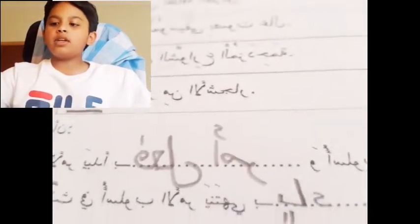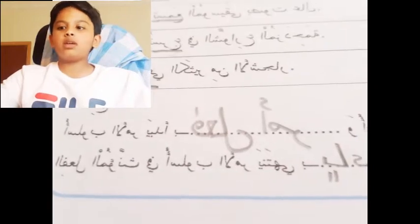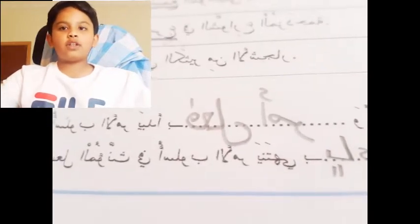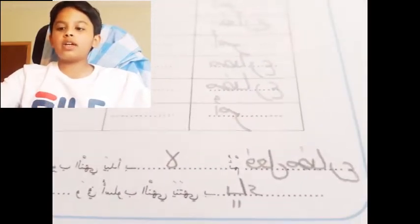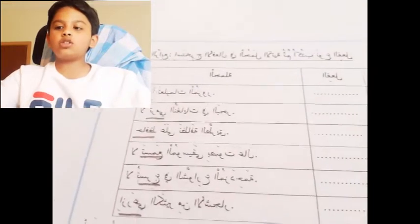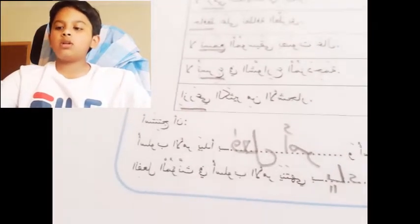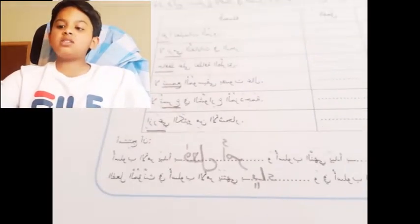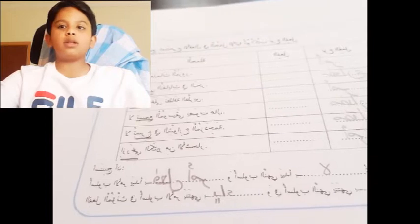That means you are supposed to conclude, like Usloob al Amr Yabda'a Bi, that means it should start with what? Fi'il Amr, that means if it is a positive sentence it should start with a positive verb. Usloob al Nahi Yabda'a Bi La because Nahi is negative. So then we saw on the other three, they are in Usloob Nahi, so they start with La and then they have Faal Mudariah.